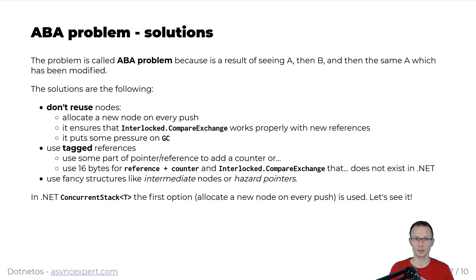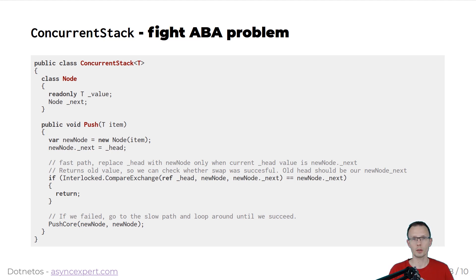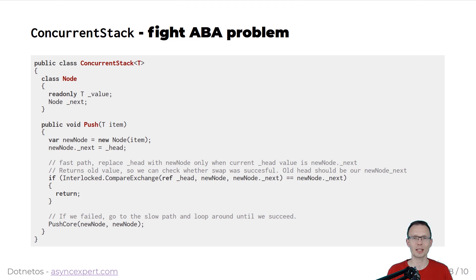In .NET, concurrent stack uses the first option — it will allocate a node on every single push. On pop, it will just get the node and leave it for the garbage collector to collect. If we revisit the push operation, we can see that for the concurrent stack it will just allocate the node and try to do the swap. There are two operations: the fast path, which basically tries to do an if interlocked compare exchange, and if that succeeds we return. If not, we go into the slow mode — push core — which does the loop with spin wait, with some retries, properly using the spin wait structure to not starve the CPU. The pop operation just pops the node, and as soon as it's popped it is left for garbage collection.